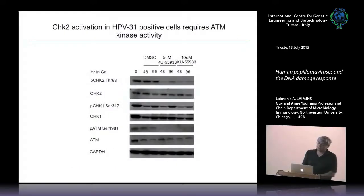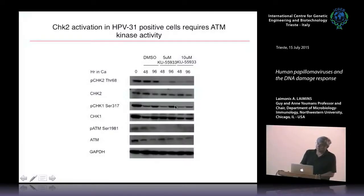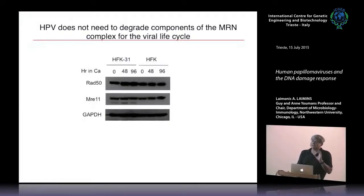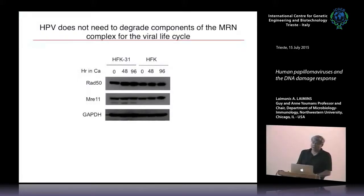We use an ATM-specific inhibitor called KU55933. Adding this drug inhibits phosphorylation of CHK2 and ATM, but has no effect on total protein levels or phosphorylation of CHK1. Interestingly, adenoviruses also target the ATM DNA damage response, but instead of activating it they suppress it, because adenoviruses replicate through linear molecules. In HPV-positive cells, the targets in adenovirus infections—MRE11 and RAD50—are really not changed.